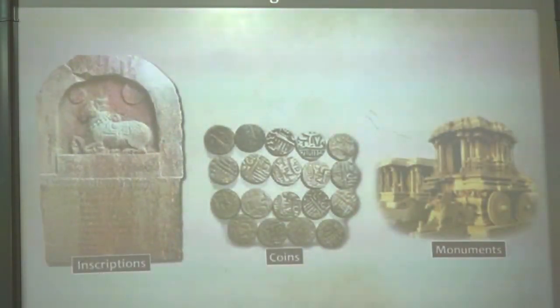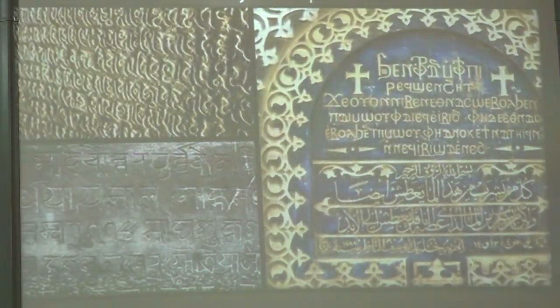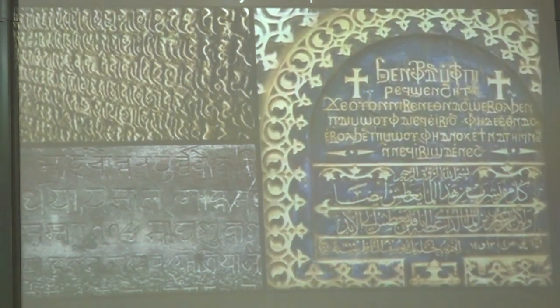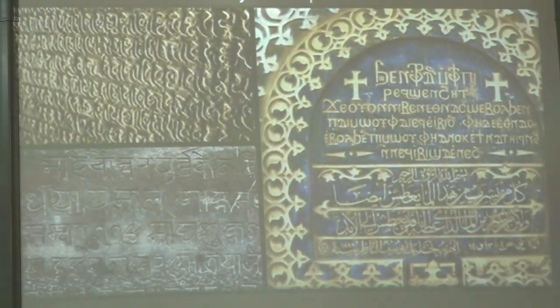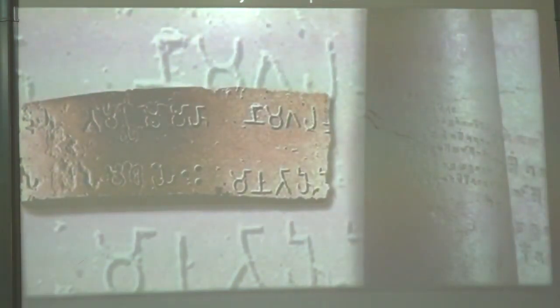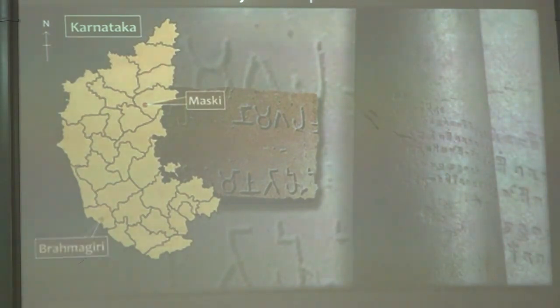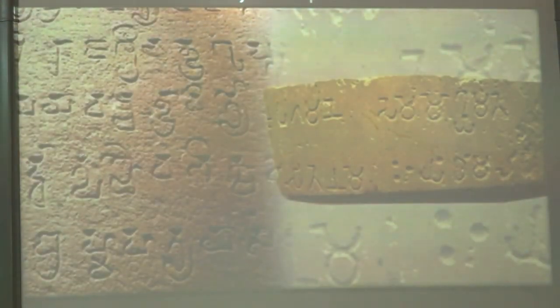Let us learn about inscriptions, coins, and monuments. Inscriptions provide us with information about the religion, culture, administration, economics, and other aspects of a given place. The earliest inscriptions found in India were written by Emperor Ashoka. These inscriptions were engraved on rock edicts, pillars, and stone slabs. Some of these edicts have been found in Maski in Raichur district. The inscriptions found in India are mostly in the Brahmi script and the Brahmi language.